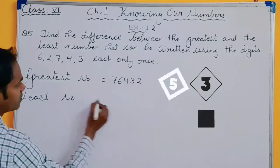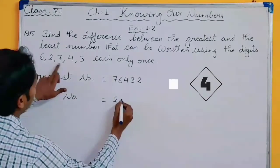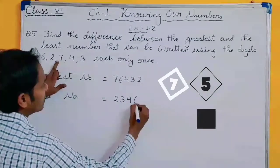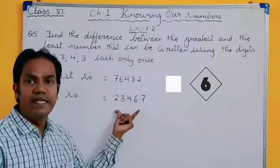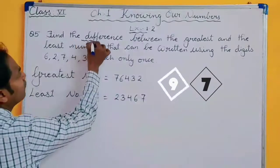Least means smallest number. So which is the smallest digit? 2, 3, 4, 6, and 7. This is your greatest number and this is your least. Least means smallest number. So what you have to find now? The difference.